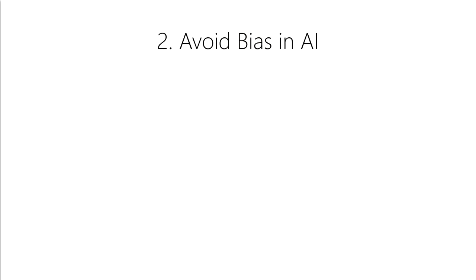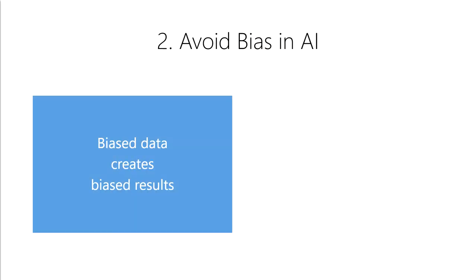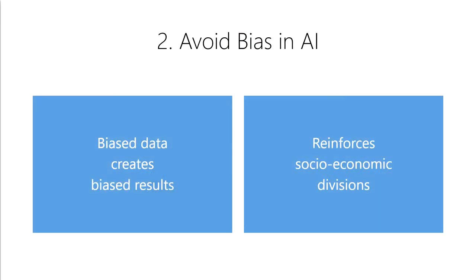Second, avoid bias in your AI models. It's very easy to accidentally or intentionally create bias in your AI models. If you train a model with biased data, you'll get biased results. As the old saying goes, garbage in, garbage out. This creates feedback loops that can reinforce and amplify existing socioeconomic divisions in our society. This will be especially true when these algorithms begin to impact the lives of millions of people.